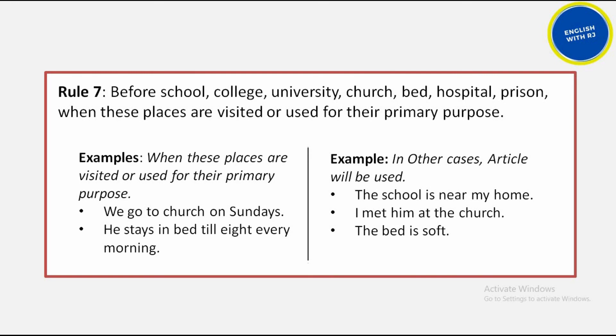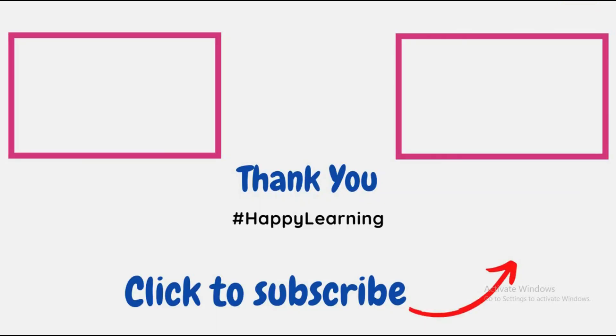When talking about the primary purpose, no article is used; when referring to the place or object itself, an article is used — focus on this distinction. I recommend watching these sessions 2-3 times, because understanding grows gradually. English is a language and we learn it slowly over time. With that, our session is finished. Happy learning to you all!